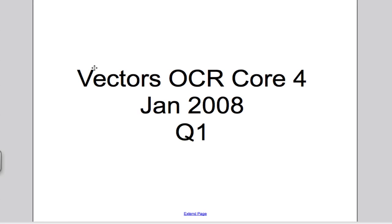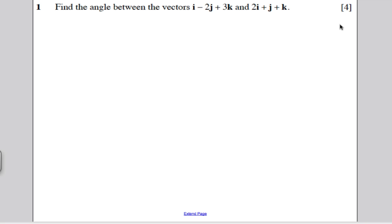Hi there. In the following video, I'm going to answer for you question 1 of the OCR Core 4 A-Level paper, January 2008. It's another question on vectors. Let's take a look. It was question 1. It was a 4 marker.